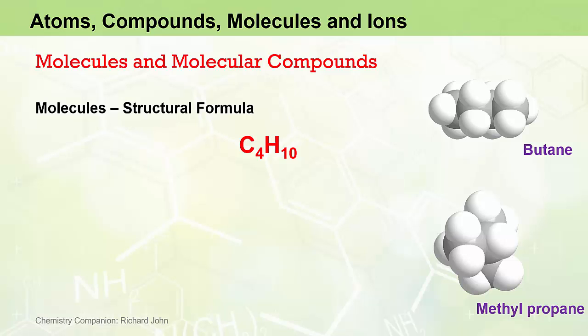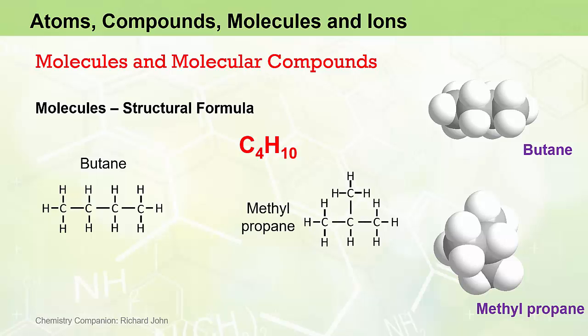To determine exactly which of the two isomers of C4H10 we might be dealing with in any particular circumstance, we use the structural formula to help out. The structural formula for butane has four carbon atoms attached in a chain, with the ten peripheral hydrogen atoms attached to the carbons. The structural formula for methylpropane has three carbons attached in a chain, with the fourth carbon attached to the central carbon of the three-carbon chain.